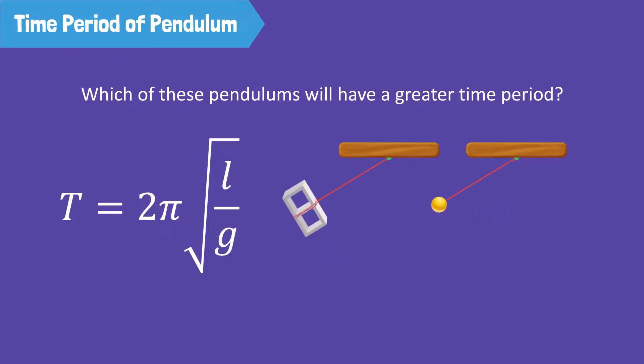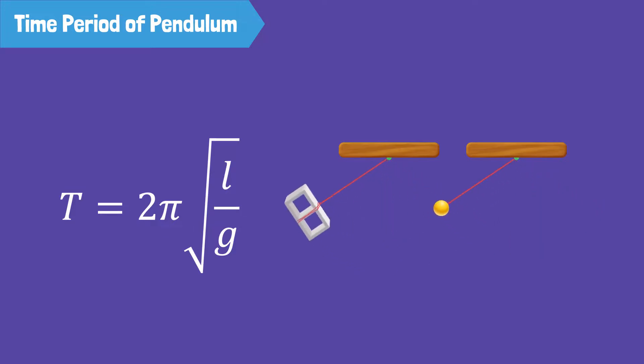The time period of both these pendulums will be the same. We can see from the formula that the time period of a pendulum only depends on the length of the pendulum string l and gravity g. As both these pendulums have the same length l1, their time period will be the same.